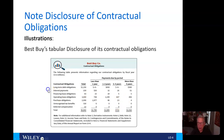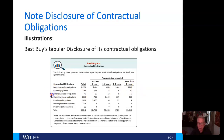As you can see, we have long-term debt obligations broken down into less than a year, one to three years, three to five years, and more than five years. Also shown are interest payments, financing lease obligations, operating lease obligations, purchase obligations, unrecognized tax benefits, and deferred compensation. Quite a listing there.